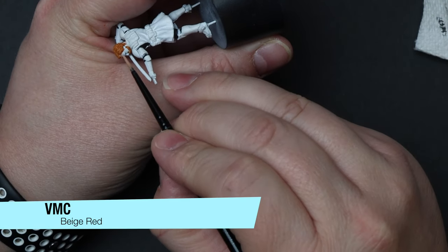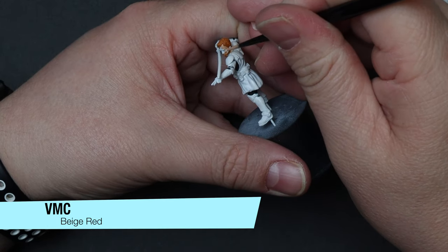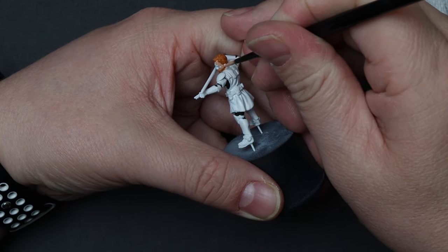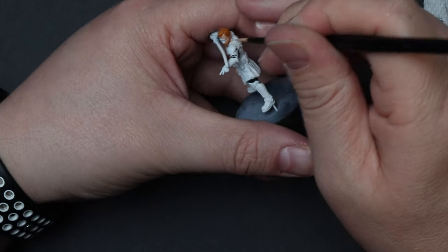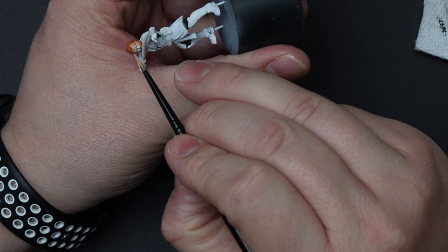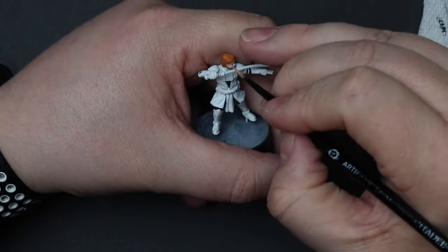Now, for Kenobi's skin, you'll want to go ahead and use your favorite or go-to face color for miniatures that are Caucasian colored. I tend to use the Vallejo model color beige-red. It does a pretty good job or a decent job of mimicking, you know, us white people.